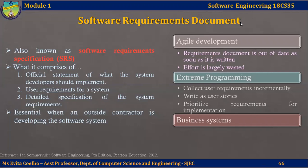We have already learned what is the difference between user requirements and system requirements. Sometimes the user and the system requirements are integrated into one single description. In other cases, user requirements are defined in an introduction to the system requirement specification. If there are a large number of requirements, the detailed system requirements may be presented in a separate document.